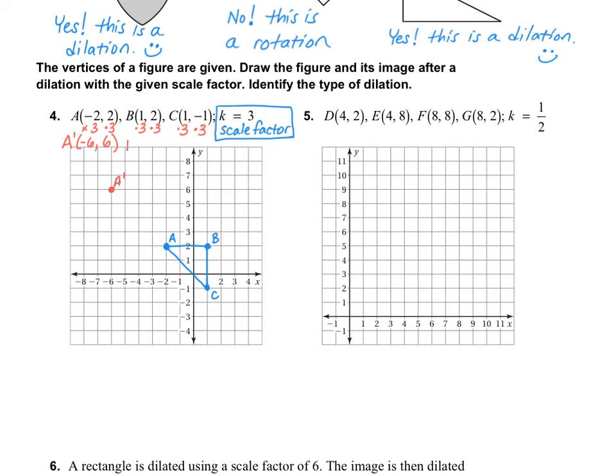My B prime point will be 1 times 3 is 3, 2 times 3 is 6. So my B prime point, I need to put a prime there, is going to be at 3, 6. So I start at the origin, go over 3, and up 6. So this will be my new B prime point.